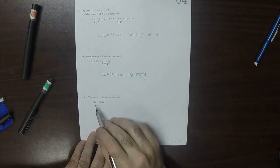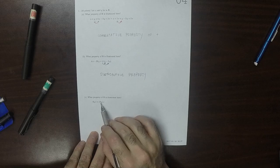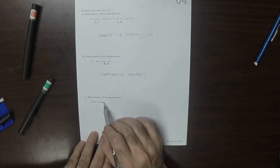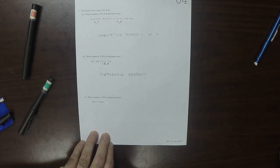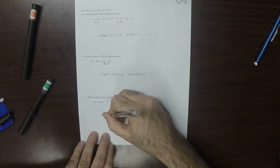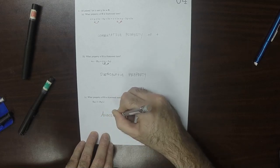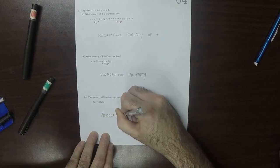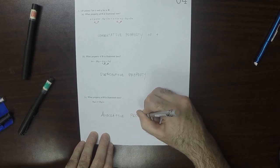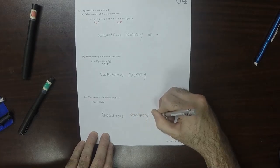And then the distinction here is that we have new parentheses. Otherwise all the factors 8y and x, 8y and x, are in the same order. So this is the associative property of product.